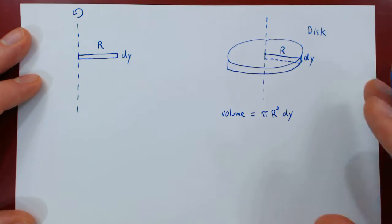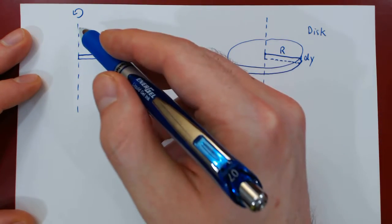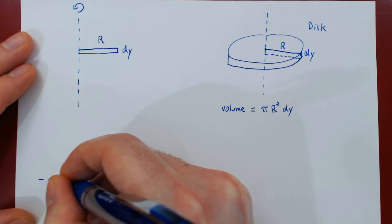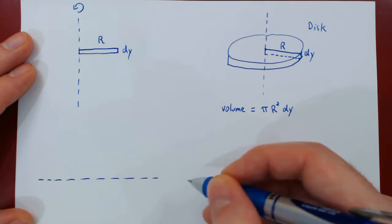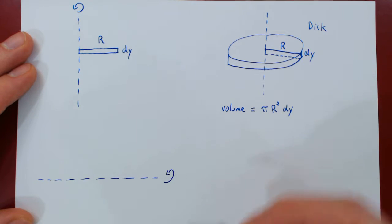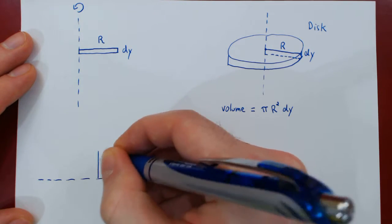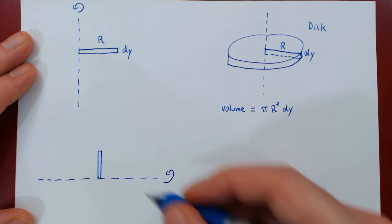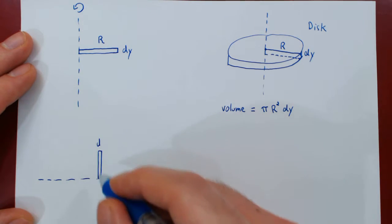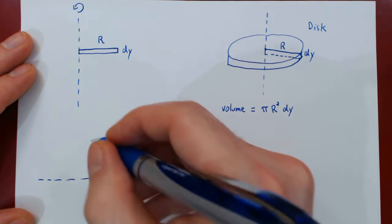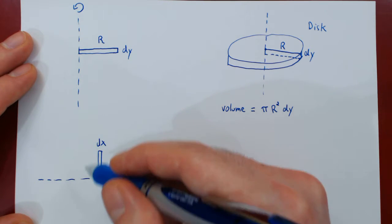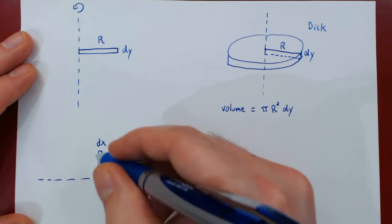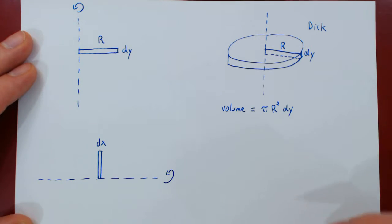You can reproduce the exact same idea if the axis is no longer vertical but horizontal. Imagine you take the x-axis and an infinitesimal vertical rectangle that touches the axis in a perpendicular fashion. The width is now a small change along the x-axis, so it is dx. If you revolve this rectangle about the axis of revolution, you obtain a little disk, but now standing up.